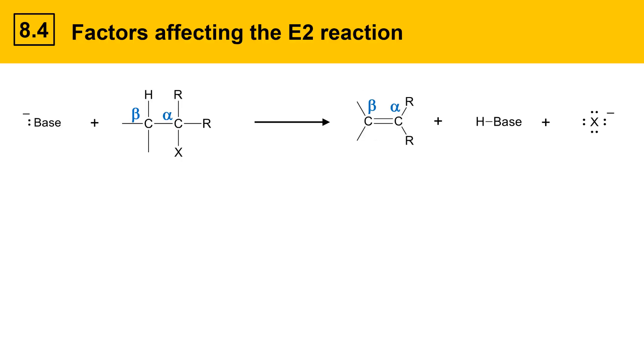Here's a general example of an E2 mechanism. There's a base, an alkyl halide, and the product is an alkene, a conjugate acid, and a leaving group.